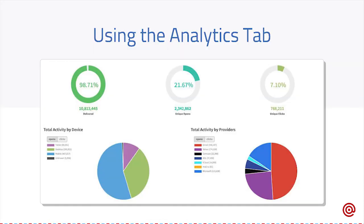Here's a picture of our Analytics tab. It'll give you a nice overview of what percentage of your emails are delivering and how many that is. It'll give you unique data, such as unique opens and clicks for the messages you're sending, and it also gives you device data — such as are they using a tablet, their mobile phone, or a desktop application to open the message. You can also filter by different providers such as Gmail, Yahoo, Comcast, and AOL — we basically list out all the top providers and give you statistics based on that.